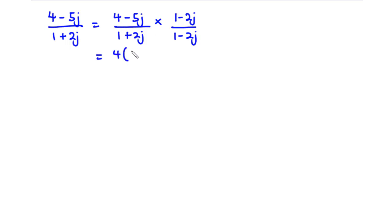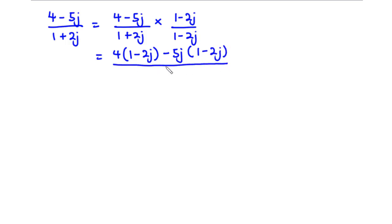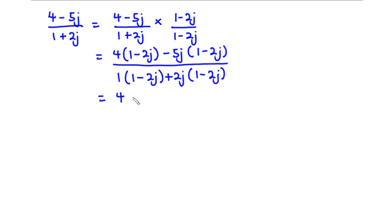Expanding the numerator: 4 times (1 - 2j) and -5j times (1 - 2j). So: 4 times 1 is 4, 4 times -2j is -8j, -5j times 1 is -5j, and -5 times -2 is 10 with j times j = j². Since j² = -1, we have 10 times -1.